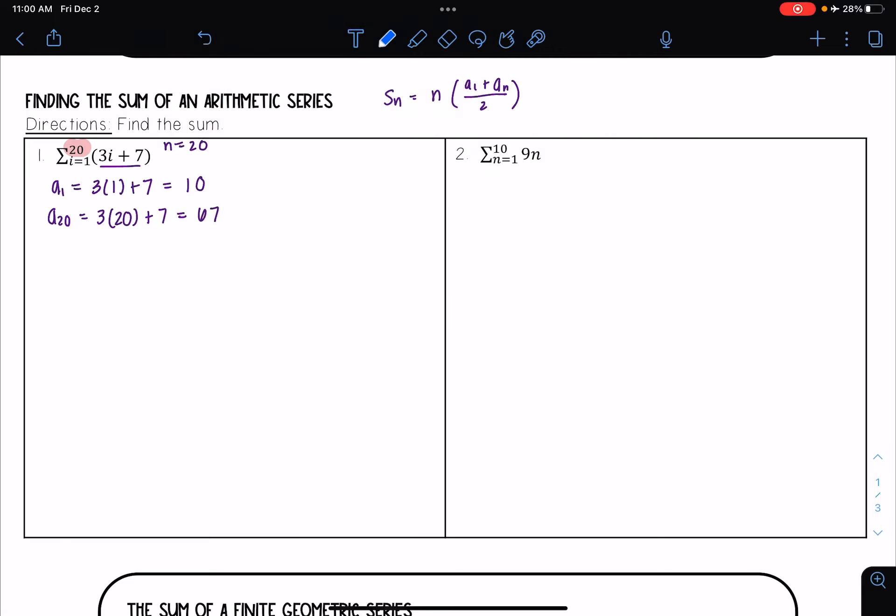So now that I have both of those terms I can go ahead and plug this into my sum. And so my sum is going to be S20 since I have 20 terms is equal to 20 times a1 plus a20 over 2.